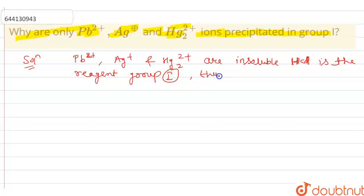Thus, chlorides of Pb²⁺, Ag⁺, and Hg₂²⁺ are precipitated in the first group.